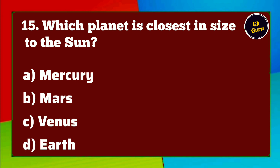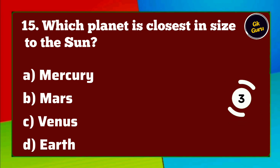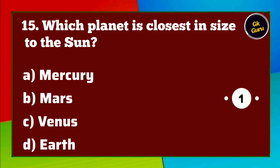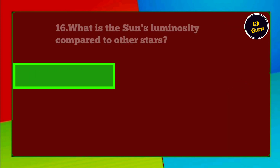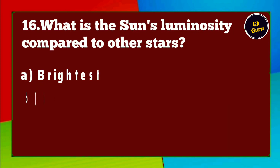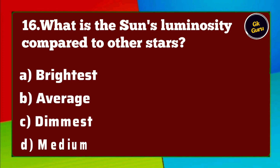Which planet is closest in size to the sun? A. Mercury B. Mars C. Venus D. Earth. Answer A. Mercury.